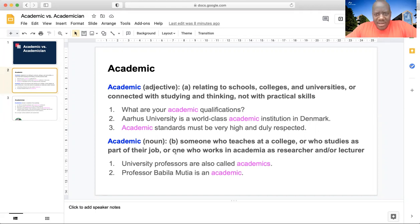But now, academic as a noun is someone who teaches at a college or in a university or who studies as part of their job or one who works in academia as a researcher and/or lecturer. So, this actually means that all university professors, all university lecturers would be called academics.